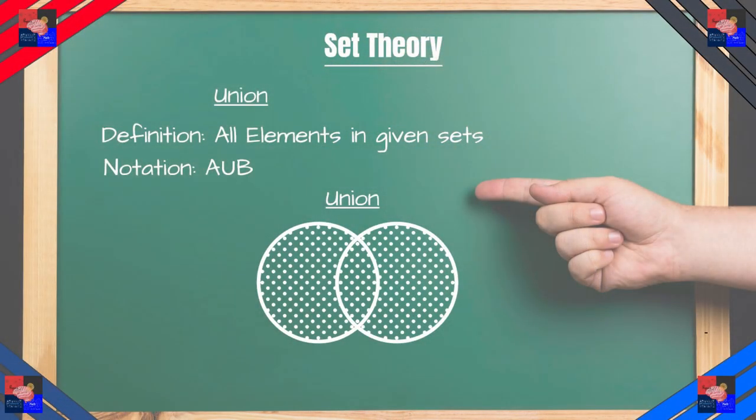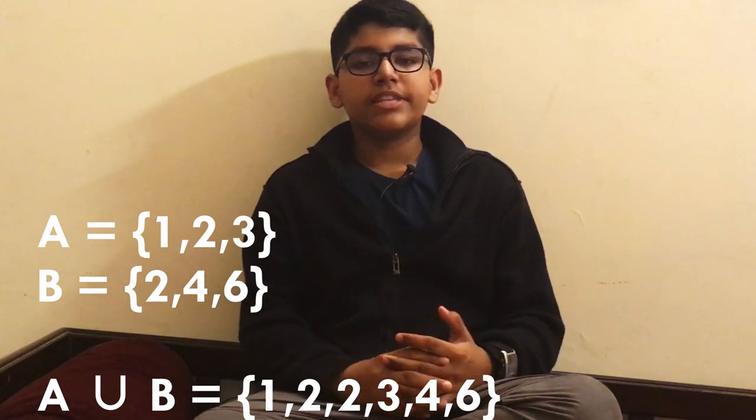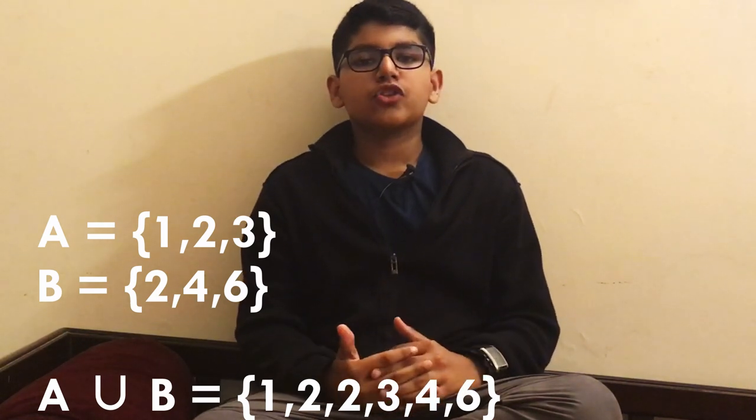So this is the intersection. For the sets that we saw here, we will write it as A intersection B equals two, because two is the only element. And remember, this is also a set, so we put the curly brackets in them. This just has one element, but in other sets we can have many many elements. So what is a union? A union is any element that is in set A and set B. So it's all the elements. This can be expressed with a capital U. So A union B equals one, two, three, four, and six.